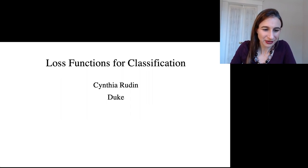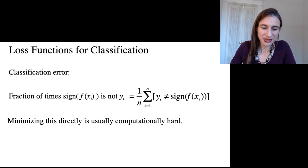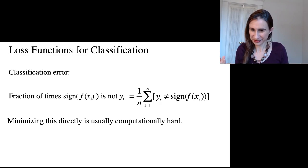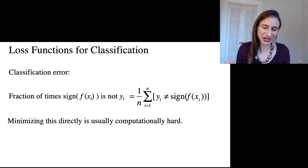This video is talking about loss functions for classification, and I'm going to start with the basic classification error, which is just the fraction of points where our predictions don't equal the truth. So it's just the fraction of times that the sign of f doesn't equal the label y.